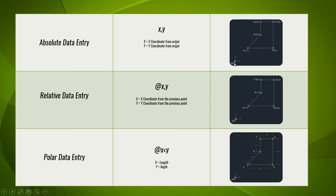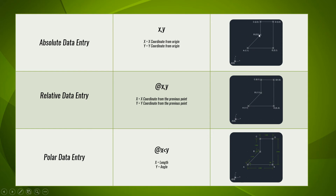As shown in the example, the origin is 0,0. From there, we plot the point 1,1 to get A. Similarly, we plot 2,2 to get point B, and so on. So when you draw a line, you can give the starting point as 1,1, then 2,2, then 2,3, and so on to complete your design. This is known as the absolute data entry method.